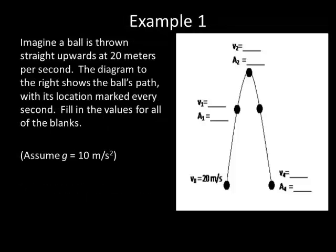Let us try a sample problem. Imagine a ball is thrown straight upwards so it travels up and falls back down. Note that the picture is not quite an accurate representation of what is happening. Imagine the ball is thrown up at 20 meters per second at time equals zero. The other dots represent times of time equals 1, 2, 3, and 4. Why don't you fill in the blanks for the various velocities and accelerations? This would be a good time to pause the video.